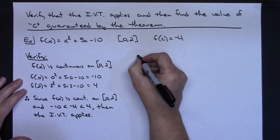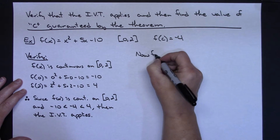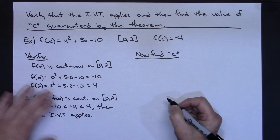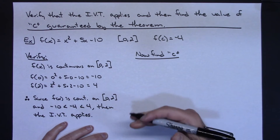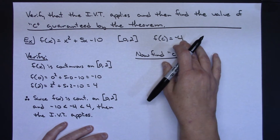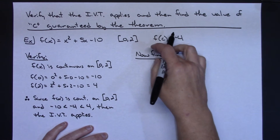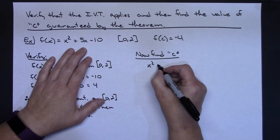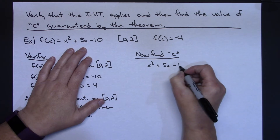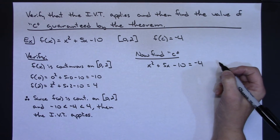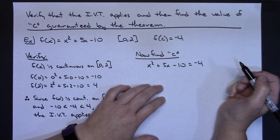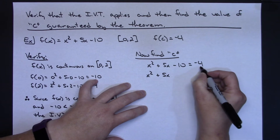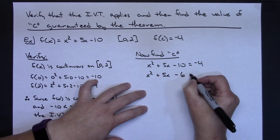Now find the value of C guaranteed by the theorem. The function has to equal negative 4, because plugging in F of C I need to get out negative 4. So I'll take the function x squared plus 5x minus 10 and set it equal to my K value, negative 4. Moving everything to the left, adding 4 to both sides, I get x squared plus 5x minus 6 equals 0.